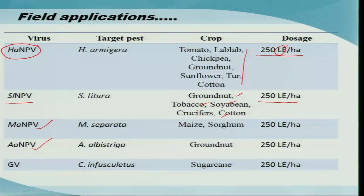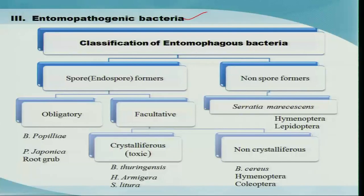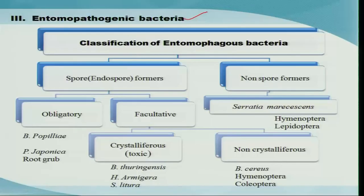Now, the third important biocontrol agent: entomopathogenic bacteria. Entomopathogenic bacteria became quite popular in the early 1990s following the discovery of Bacillus thuringiensis, which led to significant commercialization for pest management. We can classify entomopathogenic bacteria into two forms: spore formers and non-spore formers.